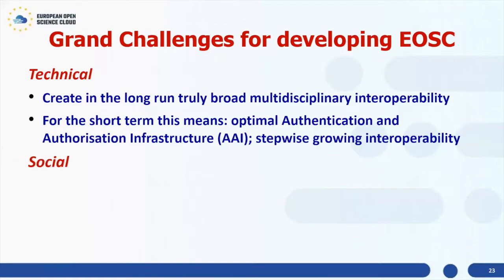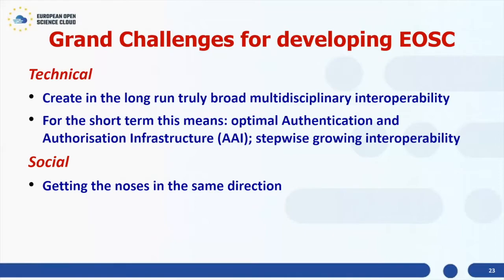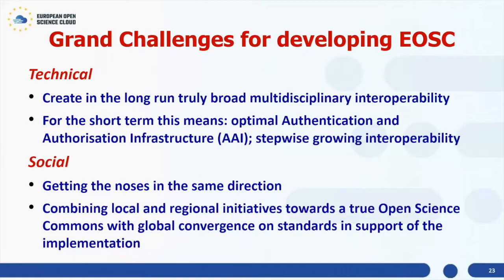More difficult are the social challenges: getting everyone moving in the same direction. We're talking to roughly 3,000 organizations, and getting those countries, the European Commission, and all organizations involved looking in the same direction is not easy. We also need to combine different levels — local, regional (where Europe, the United States, and Asia are each a region), up to a global convergence onto an open science commons. In my view — and I'm biased — the European Open Science Cloud is ahead of developments in other regions. In other regions you find beautiful developments, but not region-wide. In Europe we have a region-wide development ongoing.